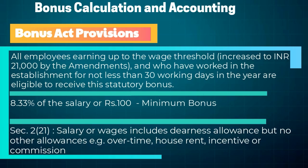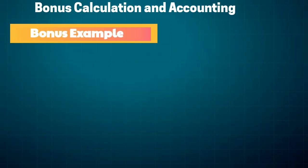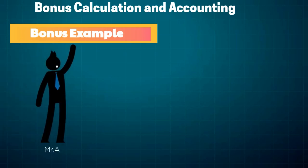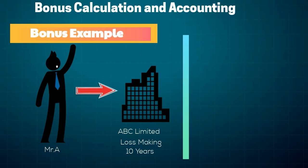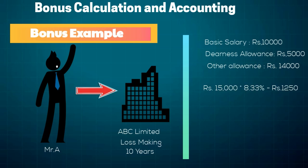Salary or wages includes dearness allowance but no other allowances, for example overtime, house rent, incentive, or commission. Let's see one example: if Mr. A works for ABC Limited for one year and ABC Limited is a loss-making company for the last 10 years, Mr. A receives 10,000 basic and 5,000 dearness allowance and 14,000 other allowance. In this case, bonus is payable on earned basic plus DA, which is 15,000, at 8.33 percent, and bonus payable is 1,250 rupees.